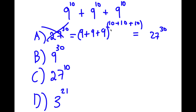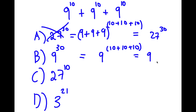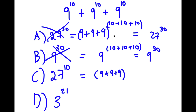For B, 9 to the power of 30 — what's been done is keeping the base as 9 and adding all the exponents: 10 plus 10 plus 10 is 30, giving 9 to the power of 30. But this is also wrong. For C, 27 to the power of 10 — this is obtained by adding the bases and keeping the exponent the same: 9 plus 9 plus 9 is 27, to the power of 10. And that is wrong as well — that's not the right way to add exponents.